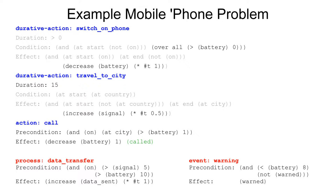We have this fact 'packed call' which will persist — nothing will delete it — so that ensures our call is going to have been made. The processes and events at the bottom: we have a process called data transfer — if you have enough signal and enough battery, your phone is going to start sending data, which might be something you want or might not. And we have this event which is a warning: if your battery is less than 8 and you haven't been warned yet, then you are now warned — it invalidates one of its own preconditions, so we don't get infinite warnings again and again.